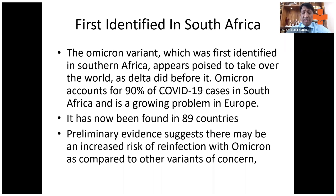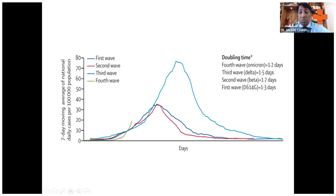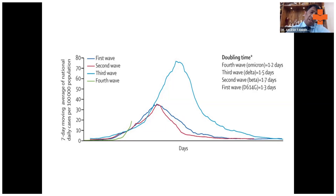The first case was identified in South Africa and it has now spread to almost 89 countries. Reinfections are very well documented with the Omicron variant compared to other variants. The doubling time of Omicron is around 1 to 1.2 days, compared to 1.5 days for the third wave, 1.7 days for the second wave, and 1.3 days for the first wave.